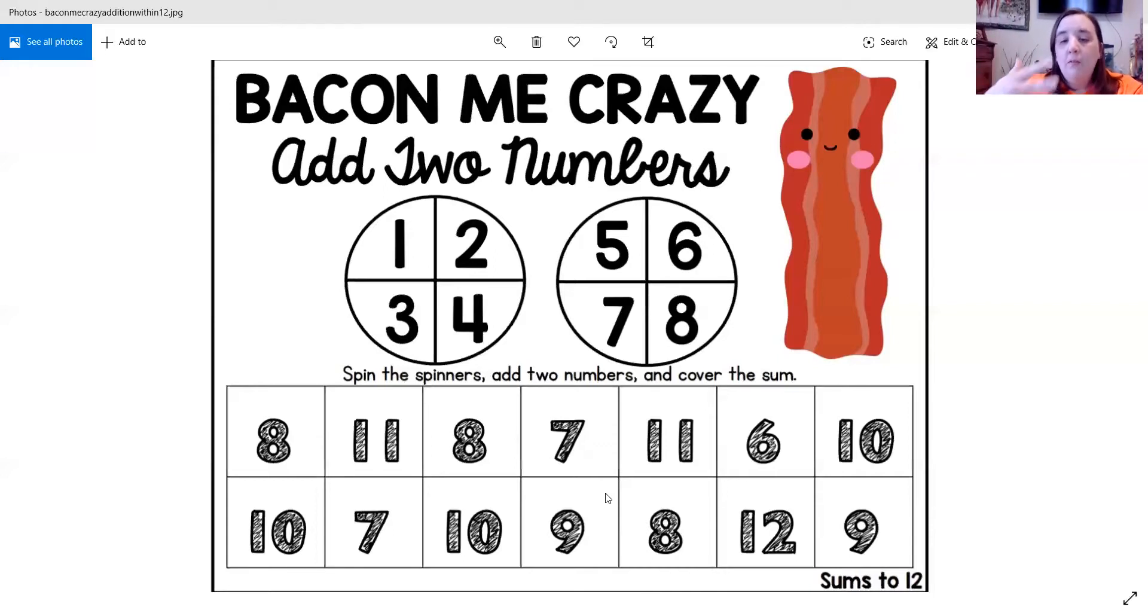Now if I got to the point of my game where let's say the only one that I need left to cover up is like 11, and after I cover 11, I win the game, all my other ones are covered.